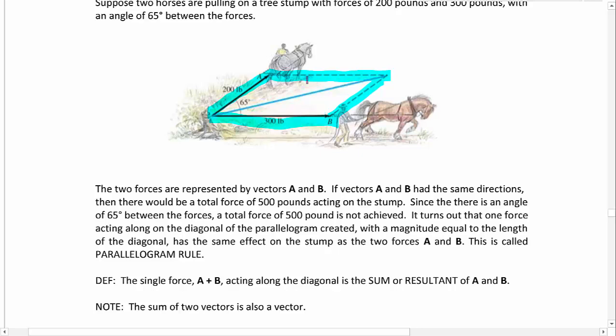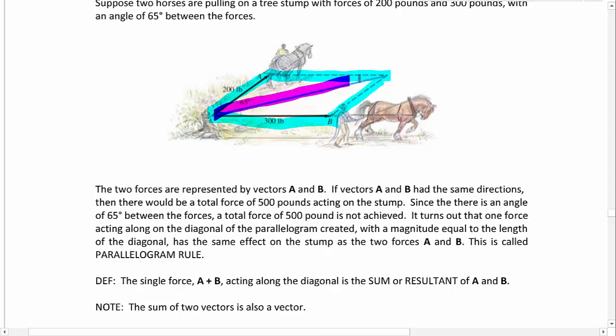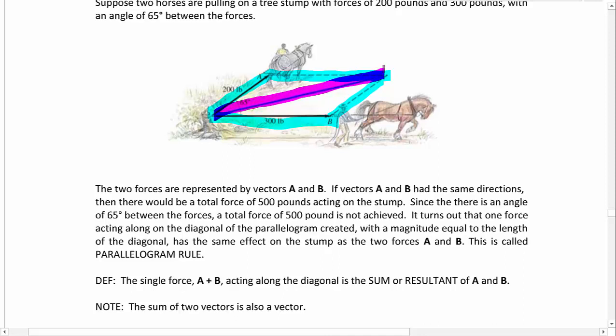It turns out that one force acting along the diagonal of the parallelogram created with a magnitude equal to the length of this diagonal has the same effect on the stump as the two forces A and B together.